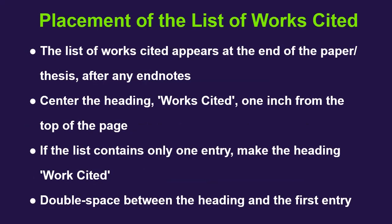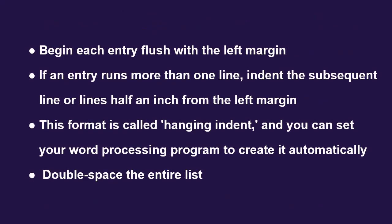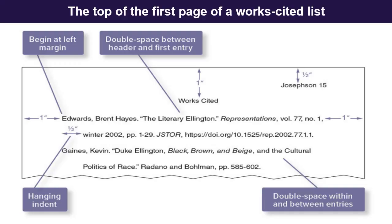Now let's see the placement of the list of works cited. The list of works cited appears at the end of the paper or thesis, after any endnotes. Center the heading 'Works Cited' one inch from the top of the page. If the list contains only one entry, use the heading 'Work Cited.' Double space between the heading and the first entry. Begin each entry flush with the left margin; if an entry runs more than one line, indent the subsequent lines half an inch — this is called a hanging indent, and you can set your word processing program to create it automatically. Double space the entire list. The top of the first page of a works cited list should look like this picture.